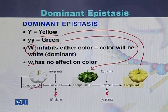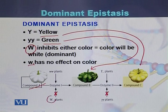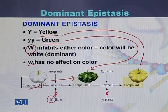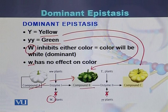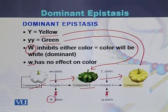Compound A is present in the summer squash. If another gene is not in dominant form, this color can be converted into green. But if that gene is in dominant form, this white color will not be converted into green. Similarly, compound B is present in green summer squash — if there is a dominant allele of this gene, it can be converted into yellow color; otherwise, this green color will not be converted into yellow.